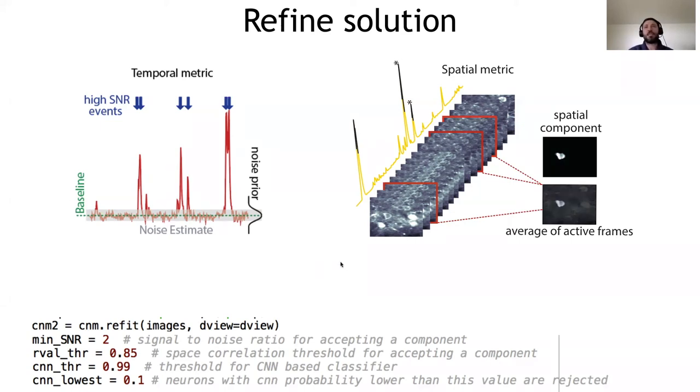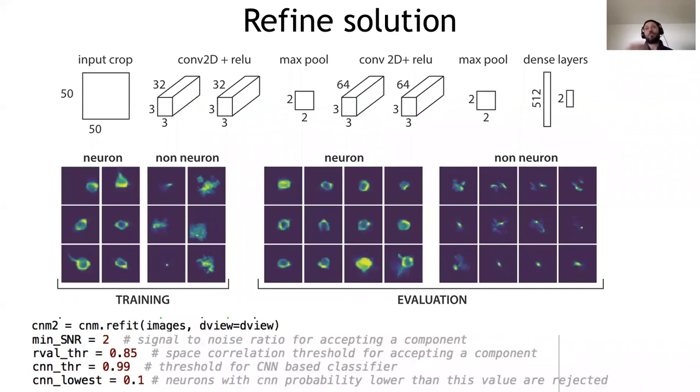The third criteria is based on convolutional networks. We trained a very simple convolutional network. Convolutional networks are a form of supervised learning. We trained this algorithm to recognize what looks like neurons from what looks like either puncta or simply noise. After training this algorithm with about one third of the data, then we test on the remaining datasets. And as you can see, the algorithm is very good at deciding what looks like a neuron and what doesn't look like one. And of course, these algorithms are very good if you use datasets that are similar to the one that used for training.